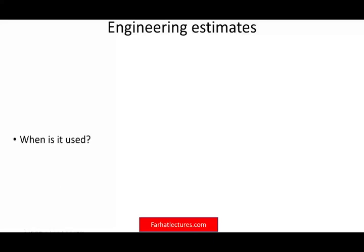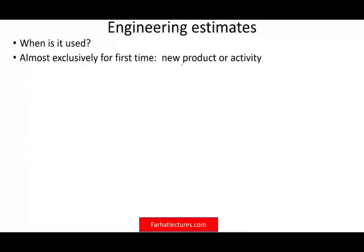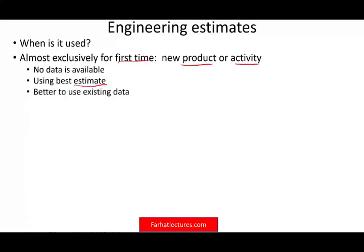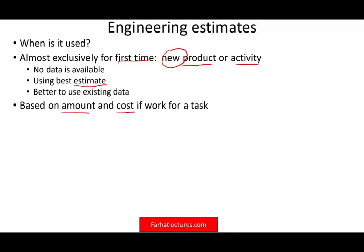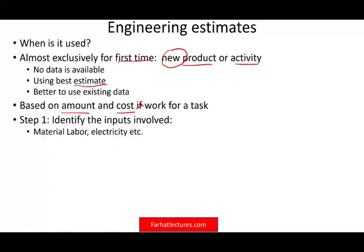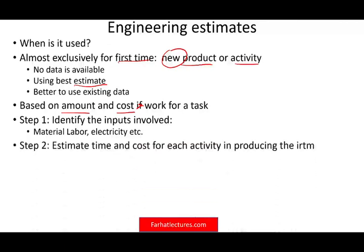The engineering method is used almost exclusively when we have a new product or a new activity for the first time, meaning we have no historical data available. We could use data from similar products or our experience with previous products. The method is based on the amount and cost of work for a task — we identify the inputs needed (material, labor, electricity, overhead), then estimate the time and cost for each activity in producing the item.